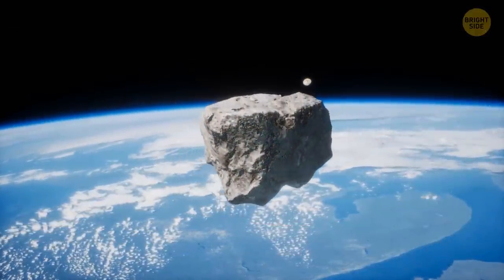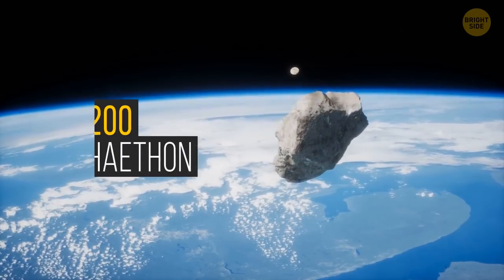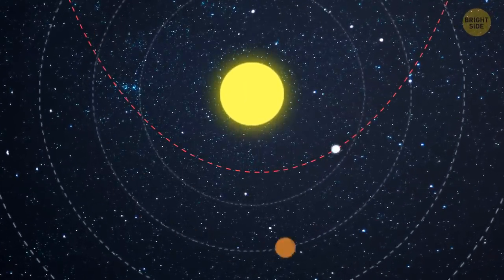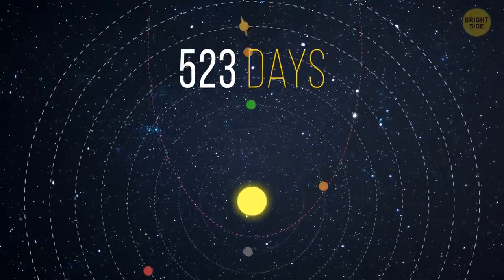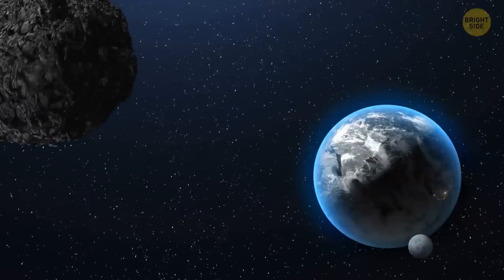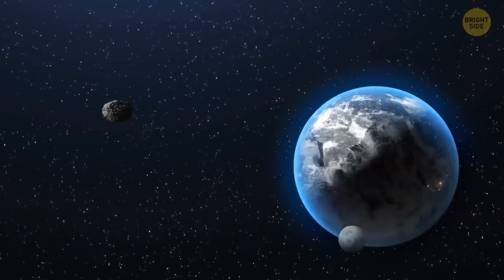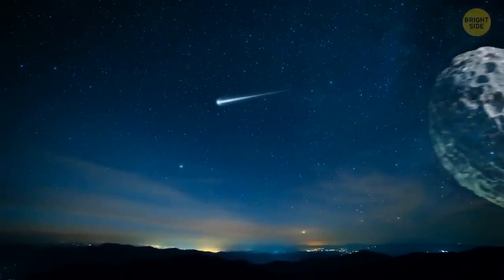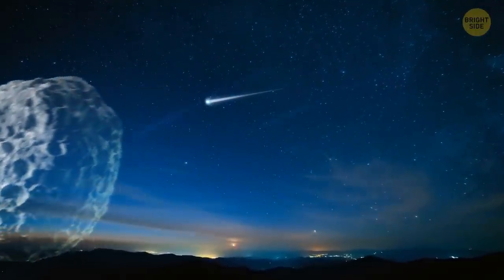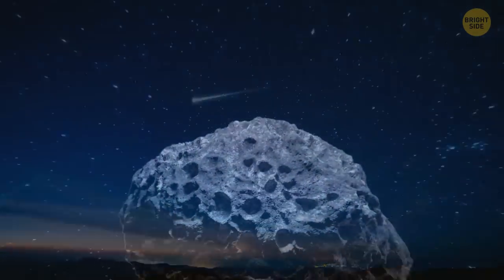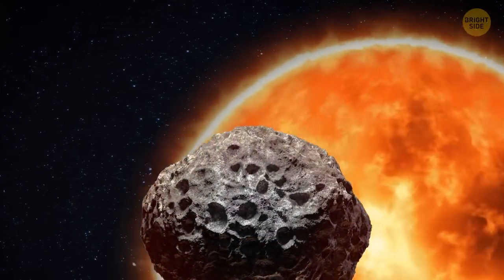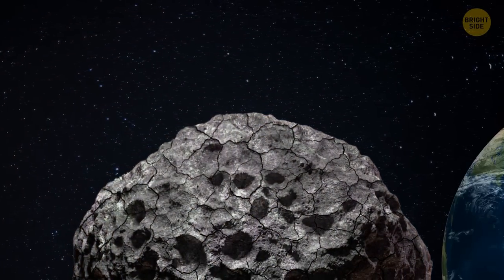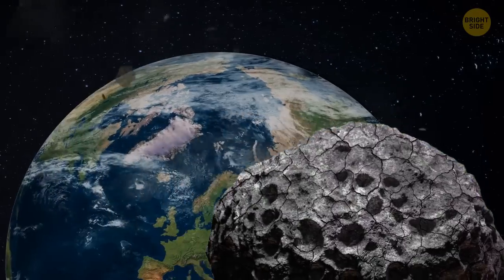Right now, we have other meteorites to worry about. For example, 3200 Phaethon. It crosses the orbits of Mars, Earth, Venus, and Mercury. Then it goes around the sun and comes back. This cycle takes about 523 days. Then it starts over again. This meteorite is considered potentially hazardous because it crosses Earth's orbit at 7.5 Earth-Moon distances. During one of its last approaches to Earth, this 3.6-mile-wide block of rock showered our planet with small meteors. Since the asteroid often passes by the sun, its surface is most likely to look like the dry bottom of a mud swamp. It's covered in scales and cracks. As it flies past Earth, these scales break off and cause meteor showers.